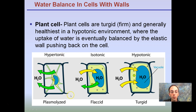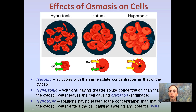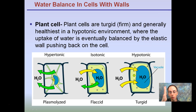Plant cells have an exterior cell wall, so they behave a little differently. Plant cells remain turgid or firm, and this is generally the healthiest state — in the hypotonic environment, where uptake of water is eventually balanced by the elastic wall pushing back on the cell. Here, turgid, we have water coming in, the large vacuole is swelled up containing a lot of water, but the plant cell is able to maintain itself because of its cell wall. Remember in hypotonic situations with red blood cells, that's when they get lysed. Plant cells are a little different — they have that cell wall, which holds the pressure and keeps plants upright and vertical.